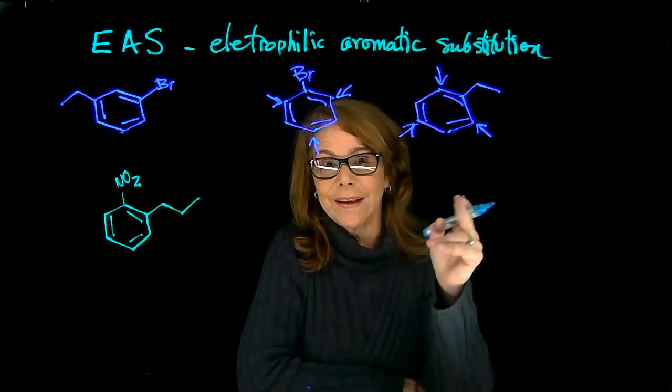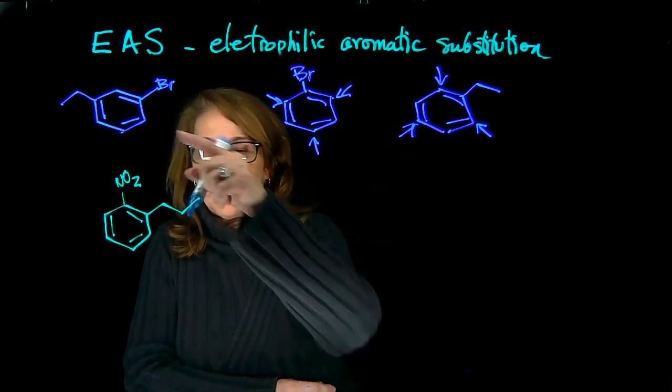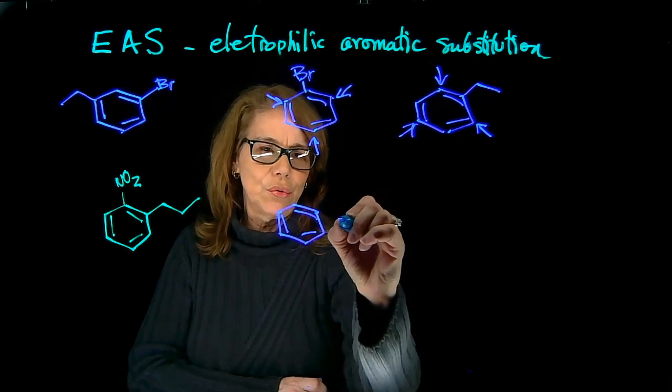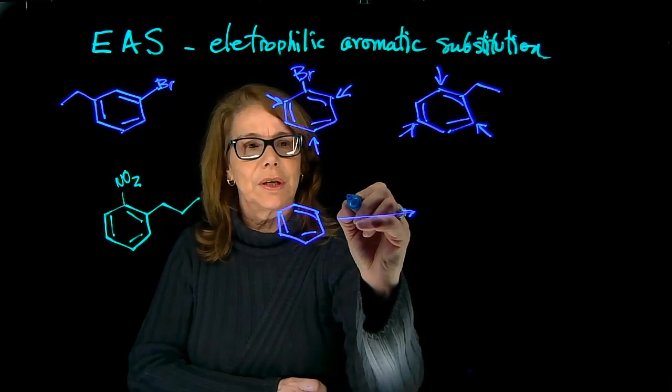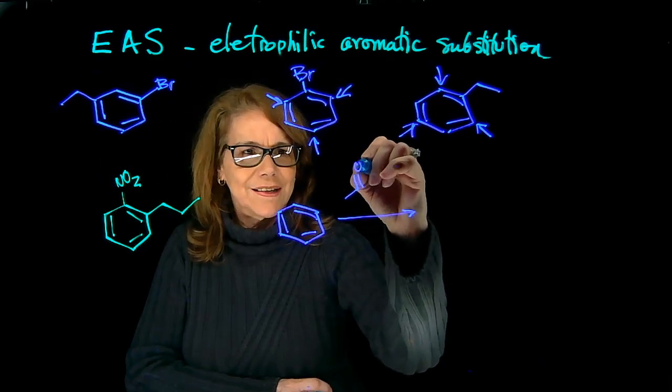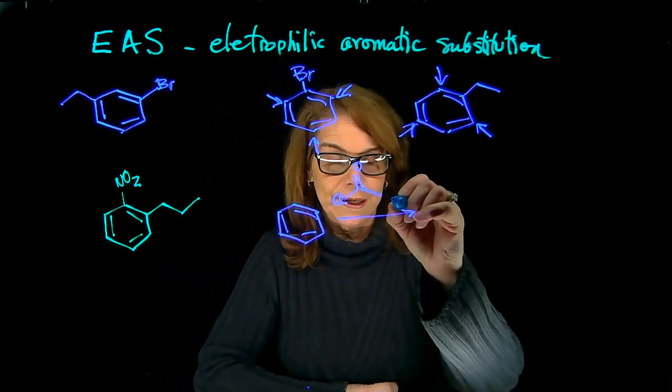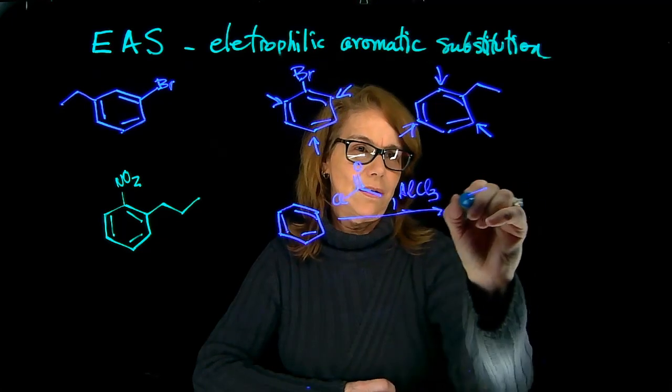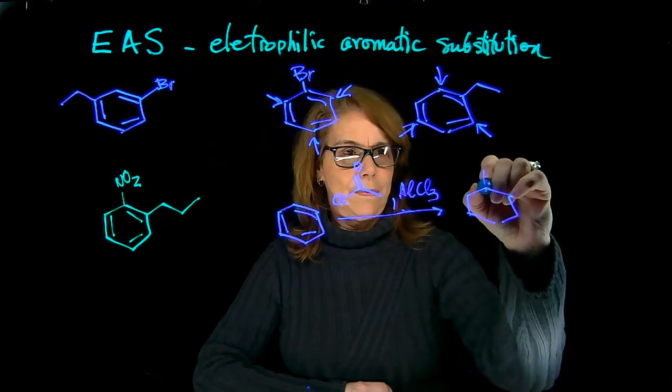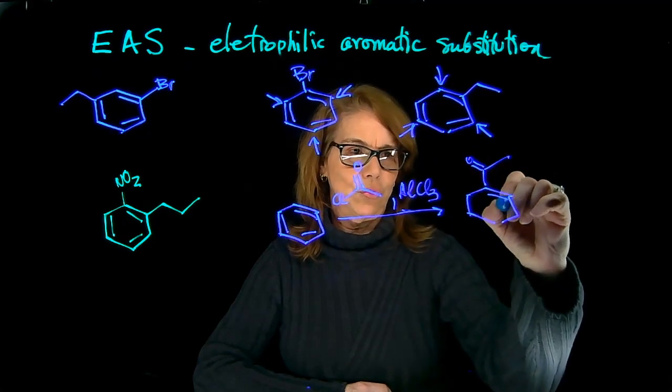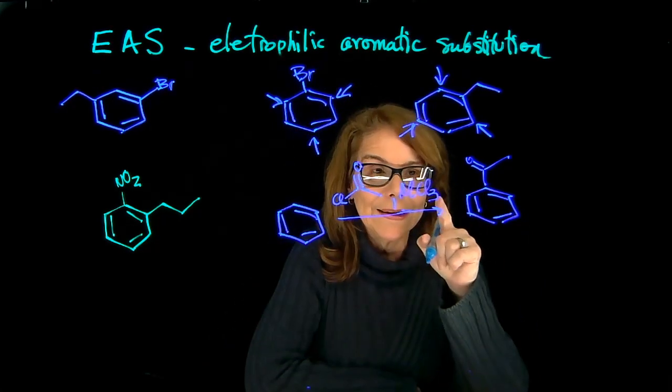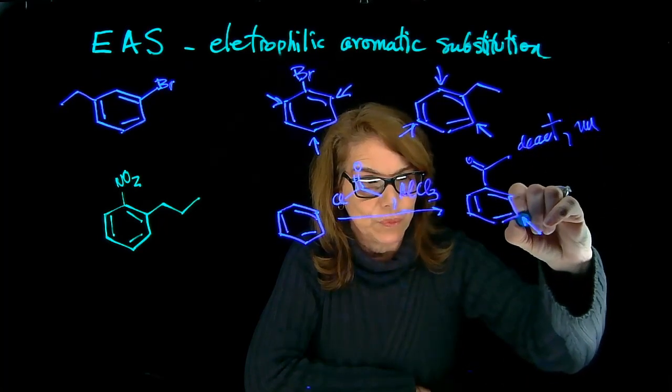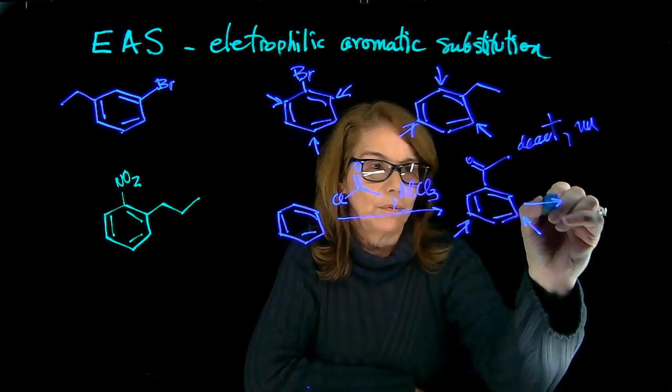What we can do here is do acylation first. So for that compound, I'm going to start from benzene, and then I'm going to do a Friedel-Crafts acylation, and I only need to add two carbons, so acetyl chloride with aluminum trichloride. In that way, I will install those two carbons that I need. Not only that, the ketone is deactivating meta directing. So now I can do a bromination, and I will get what I want.